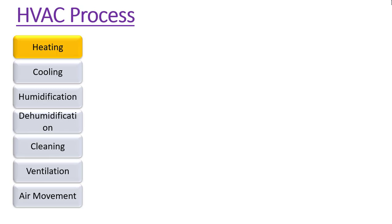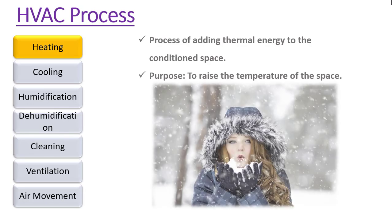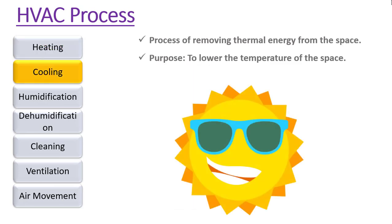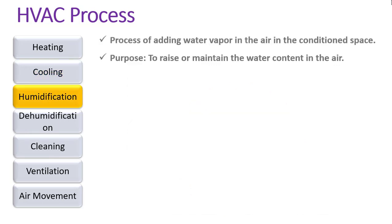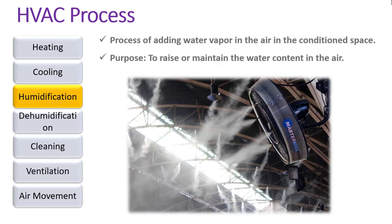HVAC consists of seven processes. Heating is a process of adding thermal energy to the conditioned space; its purpose is to raise the temperature of the space. Cooling is the process of removing thermal energy from the space; its purpose is to lower the temperature of the space.